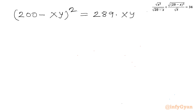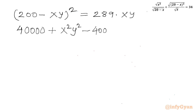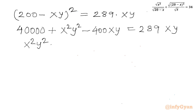Taking all terms to the left using the (A − B)² expansion: 40,000 minus 400xy plus x²y², minus 289xy, equals 0. This simplifies to x²y² minus 689xy plus 40,000 equals 0. This is a quadratic equation in xy.